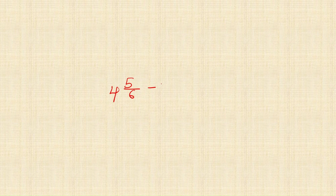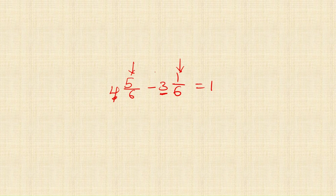Consider 4 and 5 upon 6 minus 3 and 1 upon 6. Subtract the whole number parts first: 4 minus 3 is 1. Then subtract the proper fractions: 5 upon 6 minus 1 upon 6. Denominators are the same, so subtract numerators directly: 5 minus 1 is 4 upon 6. The result is 1 and 4 upon 6.